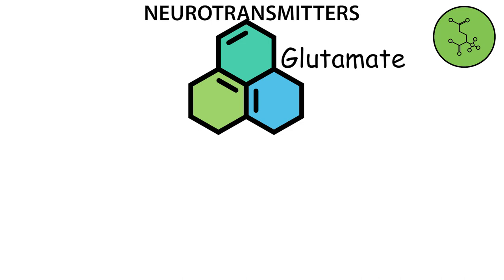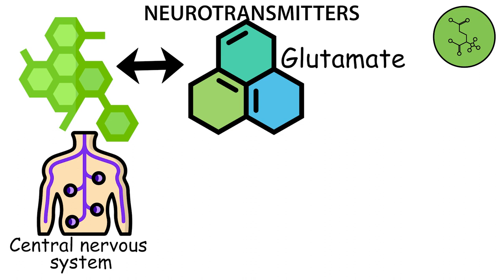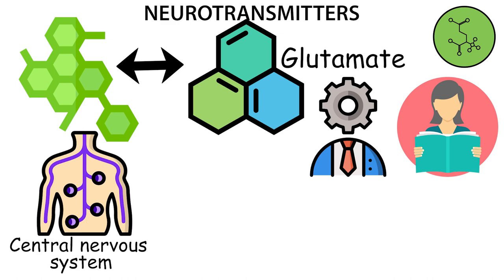Glutamate. It is related to the neurotransmitter GABA and is most abundant in the central nervous system. This type of neurotransmitter is associated with memory and learning functions, as well as more complex cognitive functions.